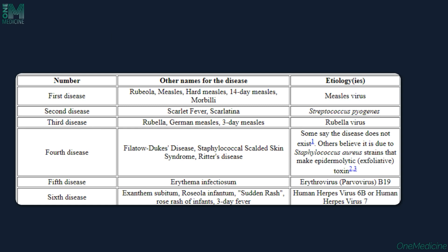In summary, the numbered childhood exanthems are: first disease — measles (measles virus); second disease — scarlet fever or scarlatina (Streptococcus pyogenes); third disease — rubella or German measles (rubella virus); fourth disease — staphylococcal scalded skin syndrome or Ritter's disease (Staphylococcus aureus, which releases exfoliative toxin); fifth disease — erythema infectiosum (erythrovirus or parvovirus B19); sixth disease — exanthem subitum, roseola infantum (HHV-6 or HHV-7, specifically HHV-6B).